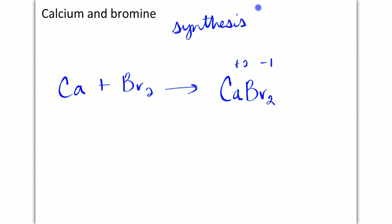Calcium and bromine. Bromine is a diatomic. This is going to be a synthesis reaction, which is going to give me calcium bromide plus 2 minus 1 switch. And this is already balanced, and so it has a 1 to 1 to 1 ratio. 1 to 1 to 1.